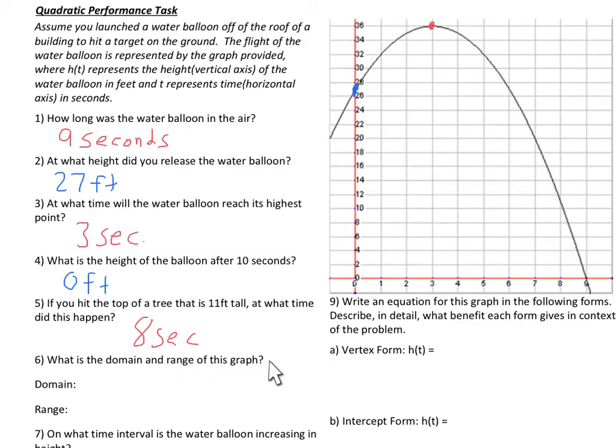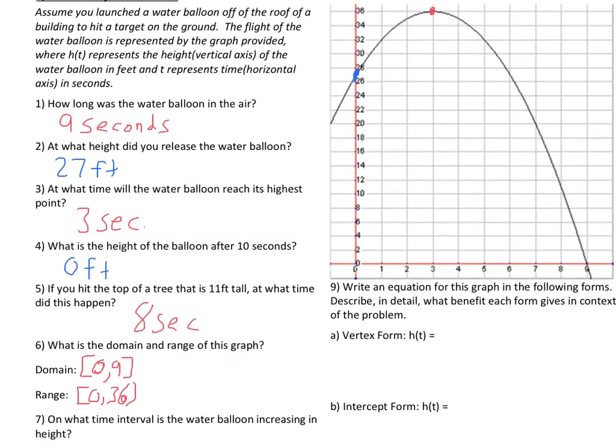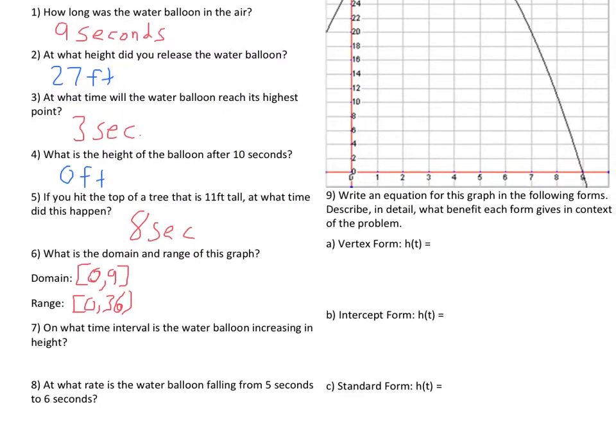What is the domain and range of the graph? Well, the domain are the x values. So that's time. So our time frame is from 0 to 9. And our range looks like it's from 0 feet all the way up to 36 feet. So our domain is going to be from 0 to 9, and that would be in seconds. Our range would be from 0 feet to 36 feet. I think I said that earlier wrong. This is 0 to 9, which is in seconds, and this is in feet.